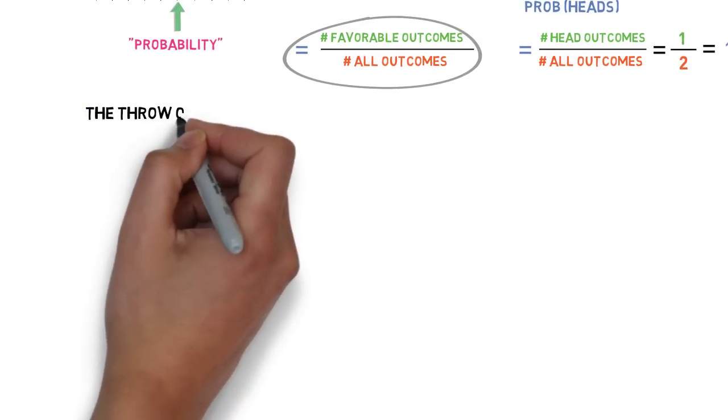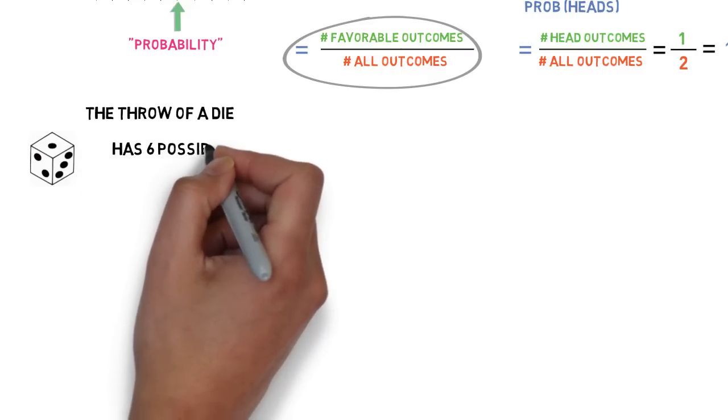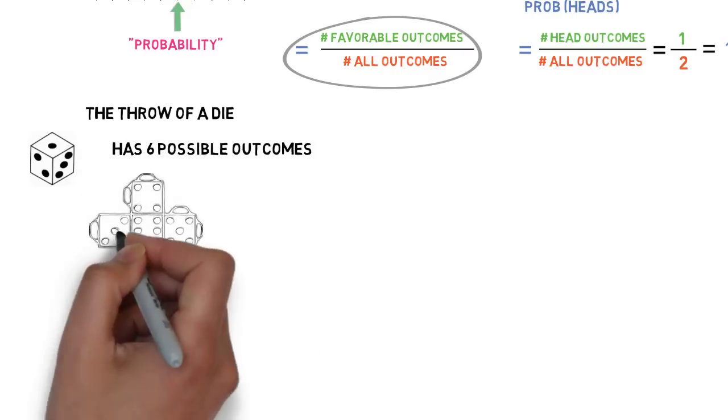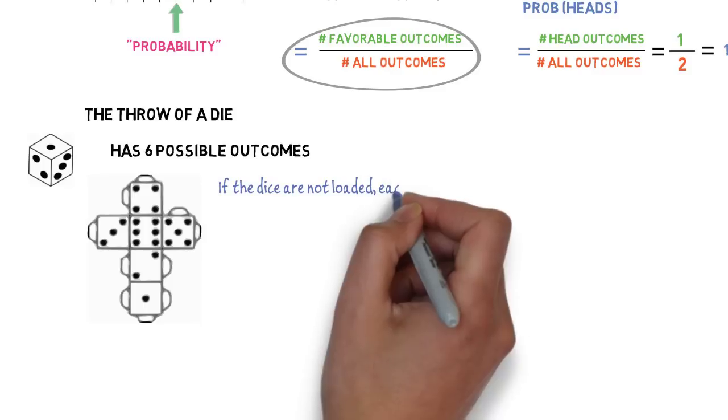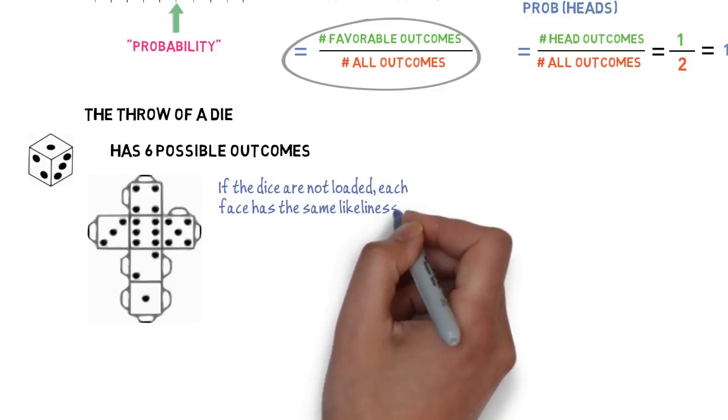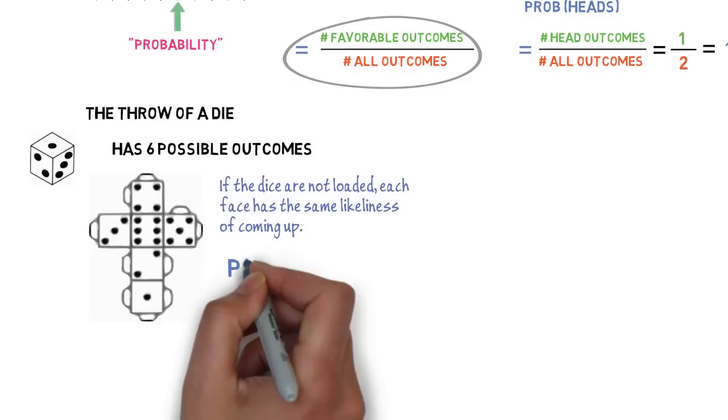Similarly, the throw of a die has six possible outcomes. If the dice are not loaded, each face has the same likeliness of coming up. Each outcome has, therefore, the same probability.